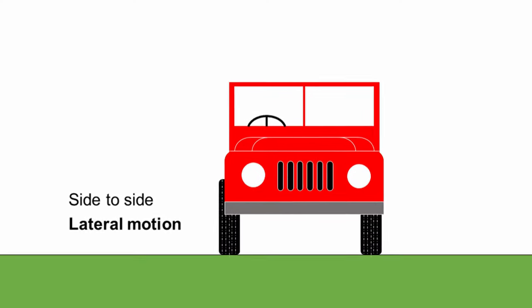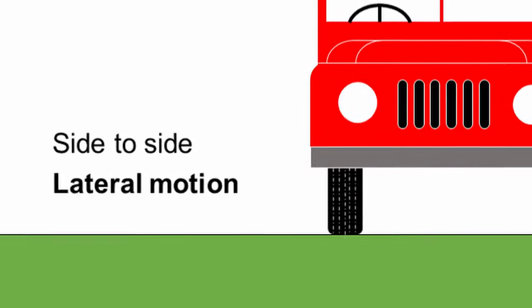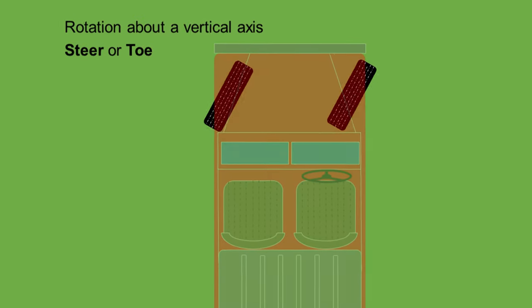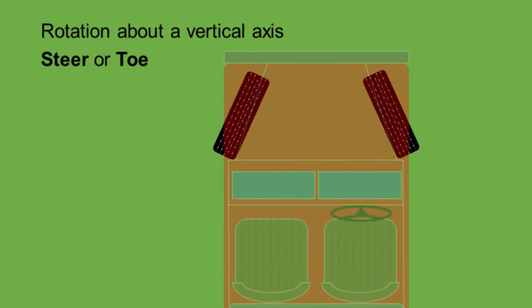We also have lateral movement, so the wheel can move from side to side — in and out, towards and away from the body. The three degrees of rotation: obviously we want the wheel to be able to rotate because that's its job and that allows the vehicle to move forwards and backwards. When it rotates around a vertical axis we call that steer or toe. At the front we want to be able to steer the wheels to enable us to steer the vehicle. We sometimes call that effect toe — when the wheels point in or out as the suspension moves — but it's essentially the same movement as steer, a rotation around a vertical-ish axis.